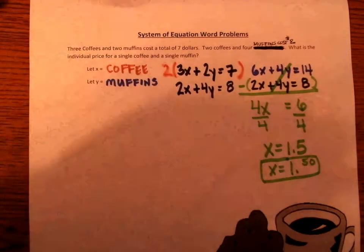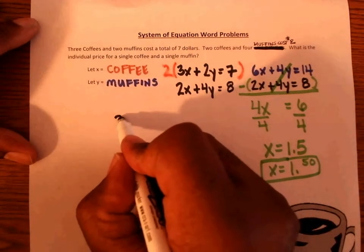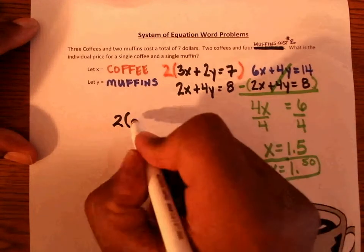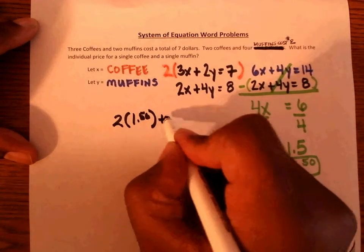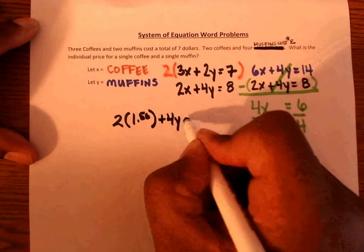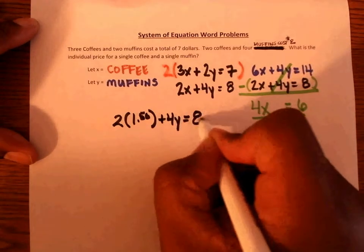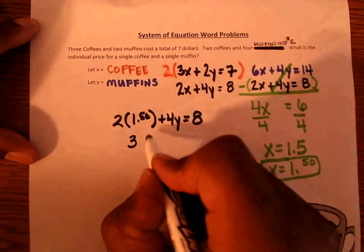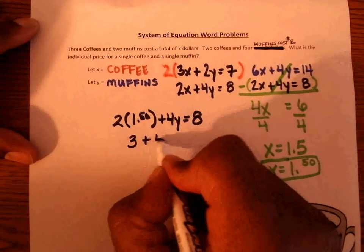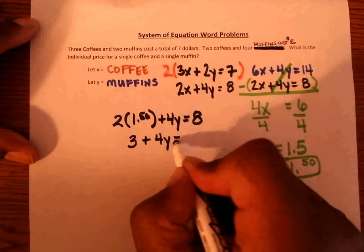So to plug it back in, we go 2 times $1.50 plus 4Y equals 8. Two times $1.50 will be $3, plus 4Y equals 8.